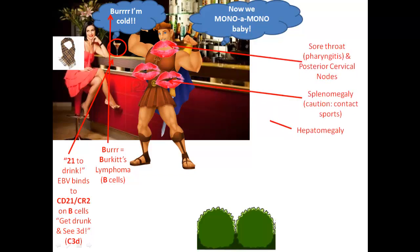Now the kisses also mean something. Their locations are going to remind you of where you see symptoms and signs. So there will be sore throat, which would be pharyngitis, and also the posterior cervical lymph nodes will be swollen. You'll get splenomegaly — caution, because if somebody's playing a contact sport in high school, say football, and they have mono and their spleen's enlarged and they take a hit, the spleen's not protected by the ribs well, so it's going to explode in an internal hemorrhage because the spleen has a lot of blood. Also hepatomegaly. And she has the hots for him, so she has a fever — this comes with a fever.